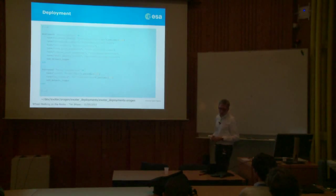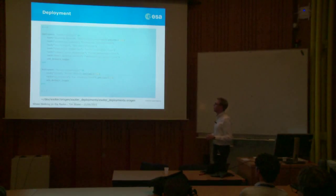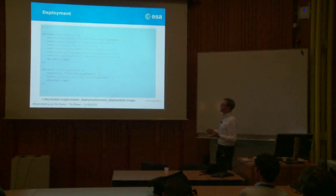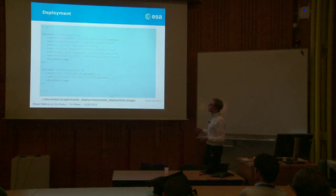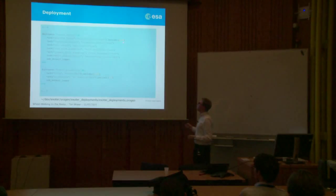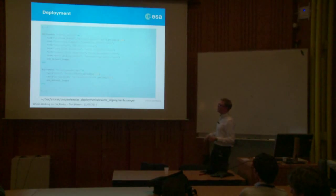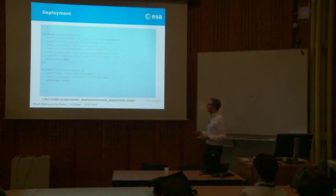For deployments, we grouped components together: one ExoTer control deployment containing the platform driver, PTU control, joint dispatchers, and wheel walking control; and one ExoTer ground truth deployment for the tracking components. The platform driver runs at 80 milliseconds, so every 80 milliseconds it outputs one joint reading. Because the other components are port-driven, they also run at that rate.